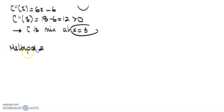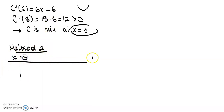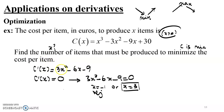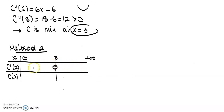Alternatively, we can determine the nature of the extremum by setting up the full table of variations. The table has X going from 0 to positive infinity, with rows for C prime of X and C of X. We know the first derivative is zero at X equals 3. To determine the sign of the first derivative around X equals 3, we test a point in each interval — for example, at X equals 1, which is in the interval from 0 to 3, replacing X by 1 in the first derivative gives a negative value, so the derivative is negative over that interval.